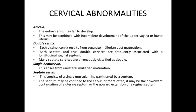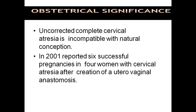Cervical abnormalities — atresia: the cervix may fail to develop, and this may combine with incomplete development of the upper vagina or lower uterus. Double cervix: each distinct cervix results from separate Mullerian duct maturation. Both septate and double cervix are frequently associated with a longitudinal vaginal septum. Many septate cervixes are erroneously classified as double. Obstetical significance: uncorrected complete cervical atresia is incompatible with natural conception. In 2001, six successful pregnancies were reported in four women with cervical atresia after creation of a utero-vaginal anastomosis.